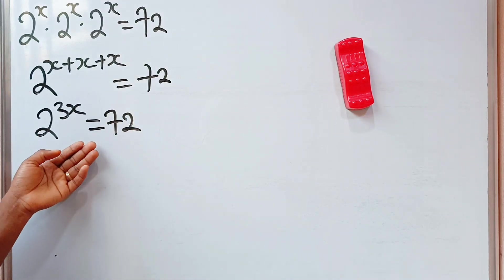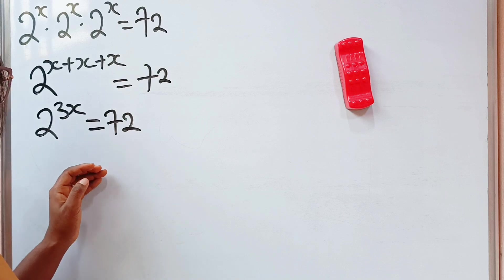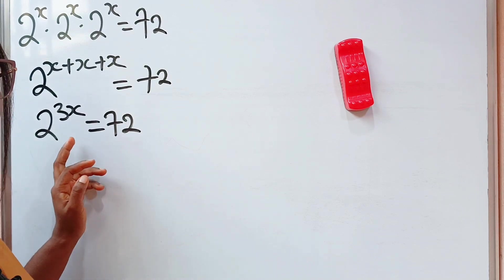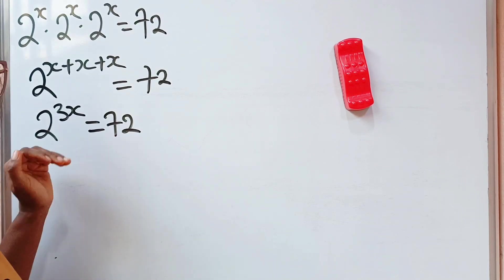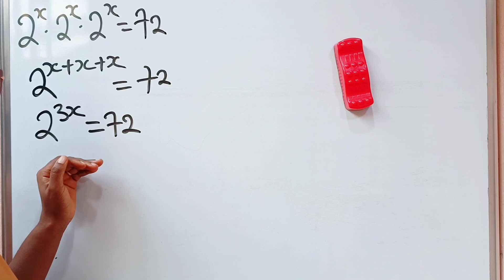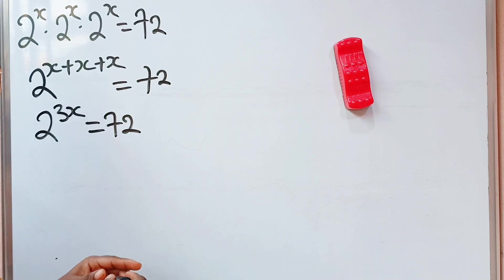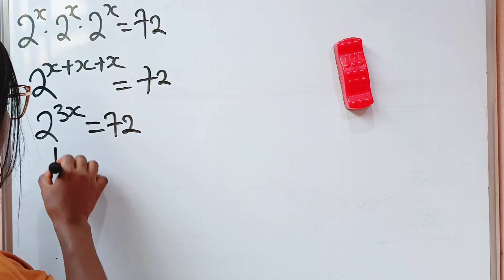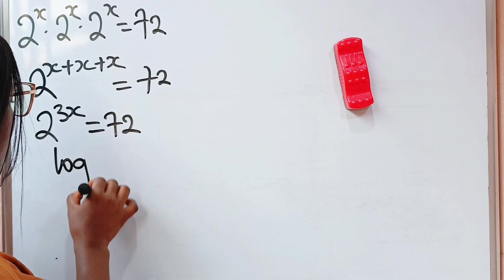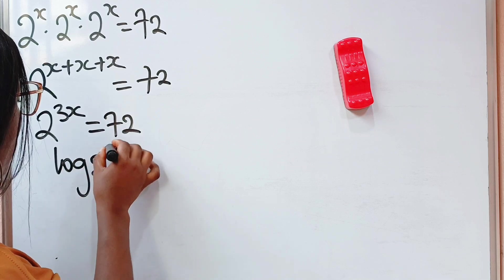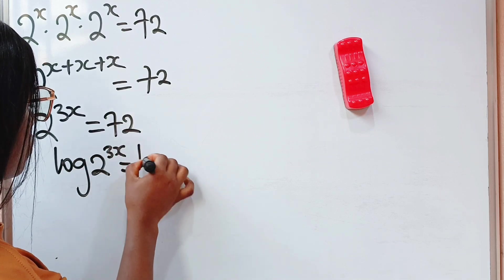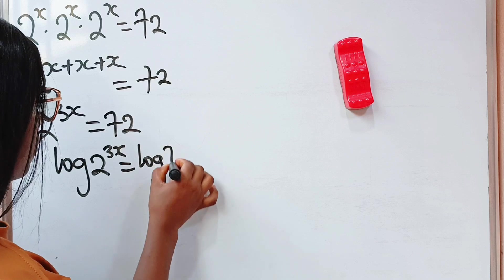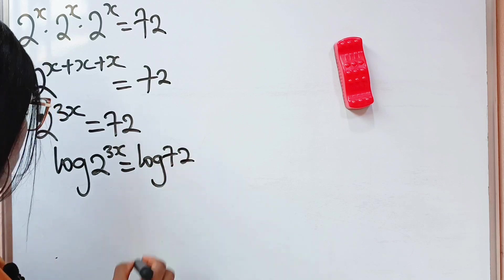Now, to get the value of x, since x is our power here, we need to introduce log to both sides of this equation. And when we do that, we are going to have log 2 to the power of 3x is equal to log 72.